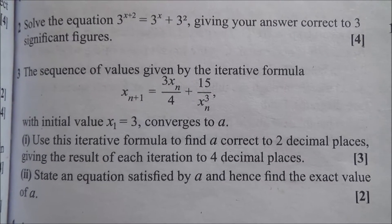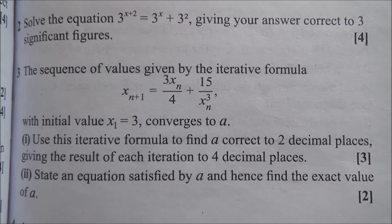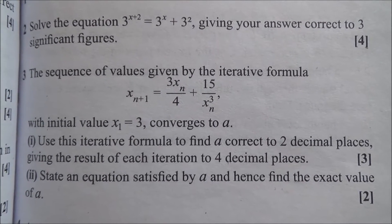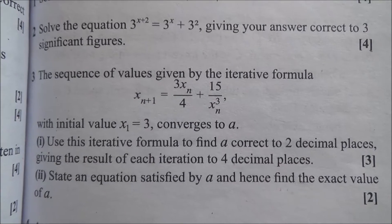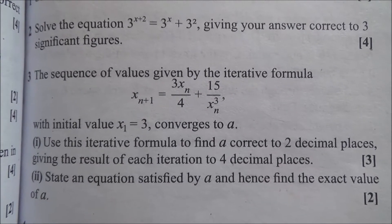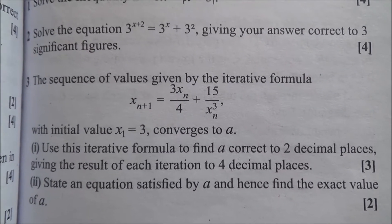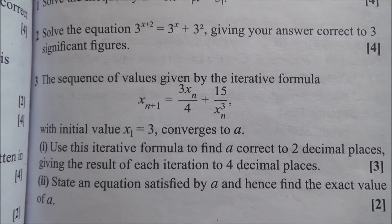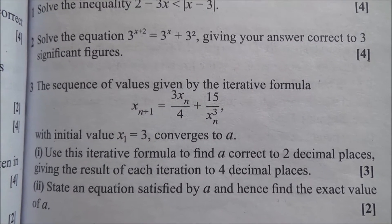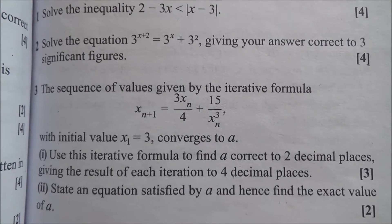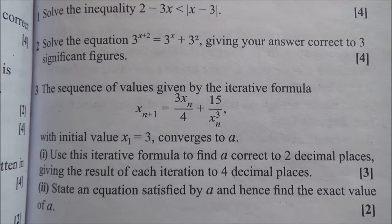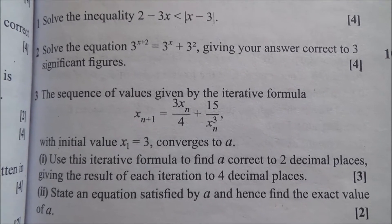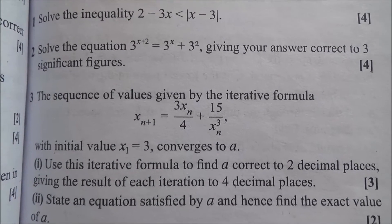The sequence of values given by the iterative formula x sub n plus 1 equals 3x sub n over 4 plus 15 over x to the cube sub n, with initial value x sub 1 equals 3, converges to alpha. Use this iterative formula to find alpha correct to two decimal places, giving the result of each iteration to four decimal places.